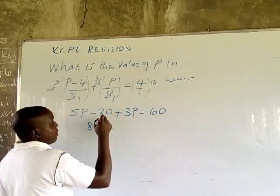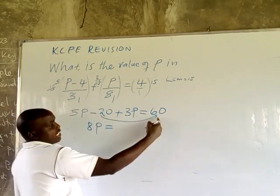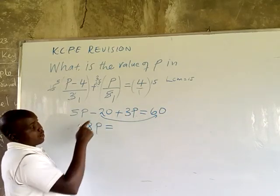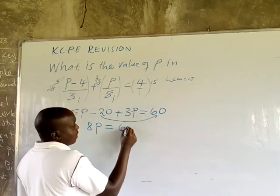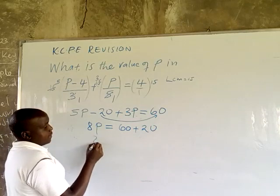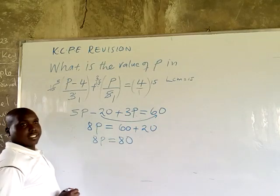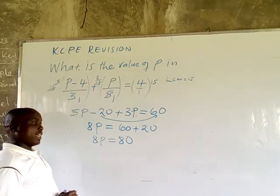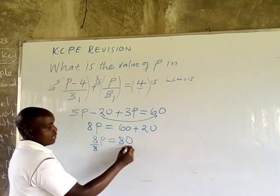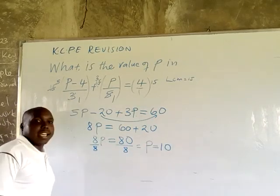Collecting like terms: 5P plus 3P gives 8P. The number 20 moves to the right side of the equal sign, changing from negative to positive, giving 8P equals 60 plus 20, which is 80. Dividing both sides by 8 gives P equals 10.